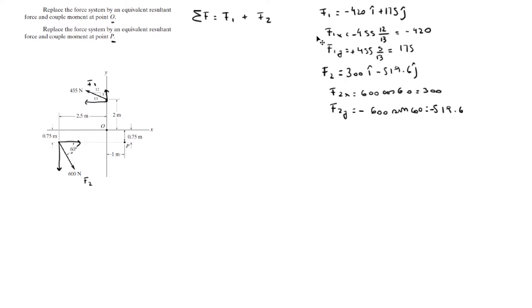So now that we have the Cartesian vector form of the forces, we can just add them up. The i's with the i's and the j's with the j's. And you're going to get that the resultant force is equal to negative 120i minus 344.6j.